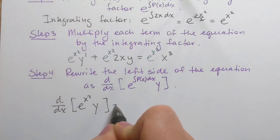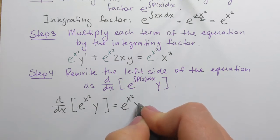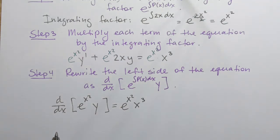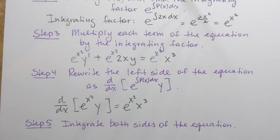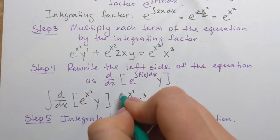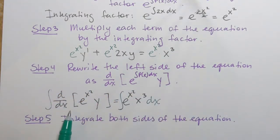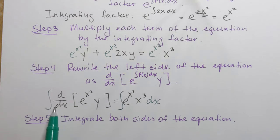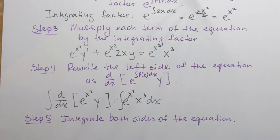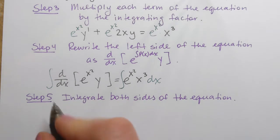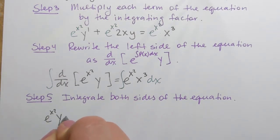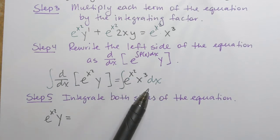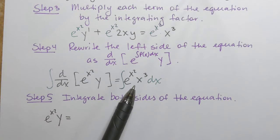The right-hand side is rewritten as e to the power x squared times x cubed. Step 5: we integrate both sides of the equation. The left-hand side is easy — the antiderivative and derivative cancel, leaving e to the power x squared times y. The right-hand side is the integral of e to the power x squared times x cubed dx, which we need to work out separately.